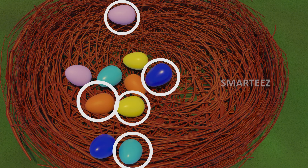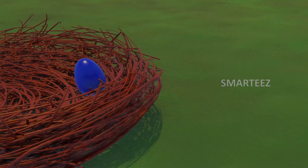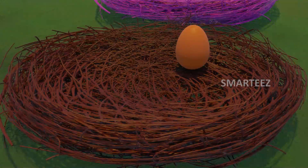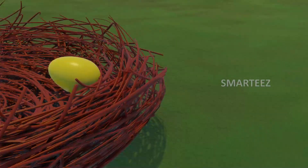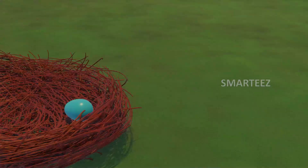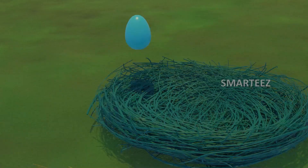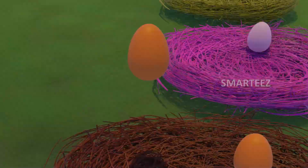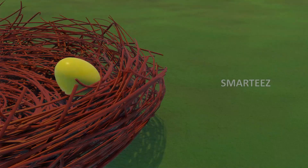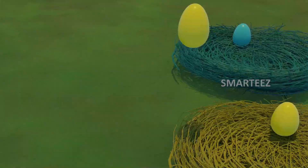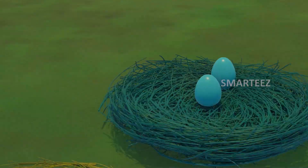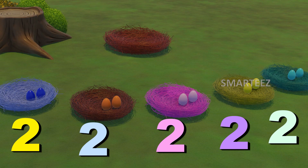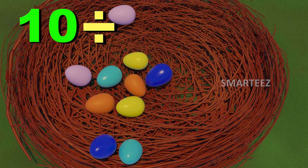They are in five different colors. Let's see what happens when they move to separate areas. One, two, three, four, five — there are totally five areas. There are two of them in each area. When we divide ten by two, we get five.